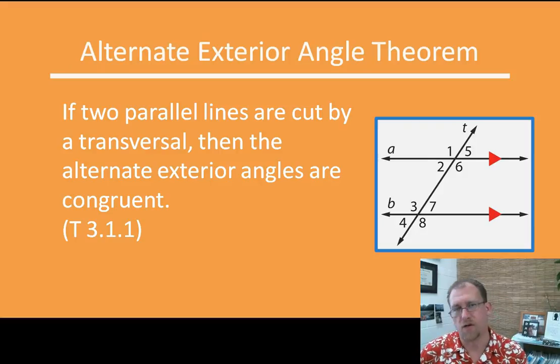Alternate interior angles are also congruent if the lines that we're looking at are parallel. So if two parallel lines are cut by a transversal, then the alternate exterior angles are congruent. So alternate exteriors would be one and eight or four and five. So in this case, if line A and B are parallel and line T is cutting them as a transversal, then the alternate exterior angles are congruent. Those are the same angles.